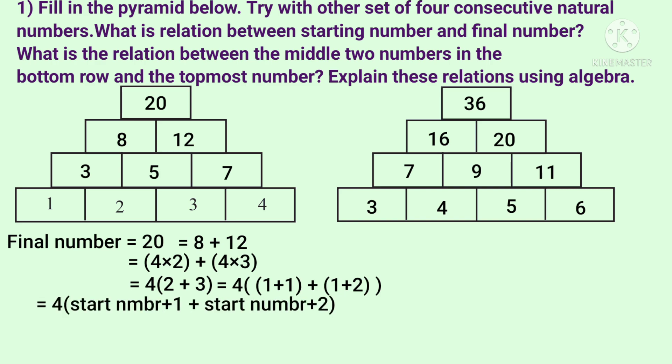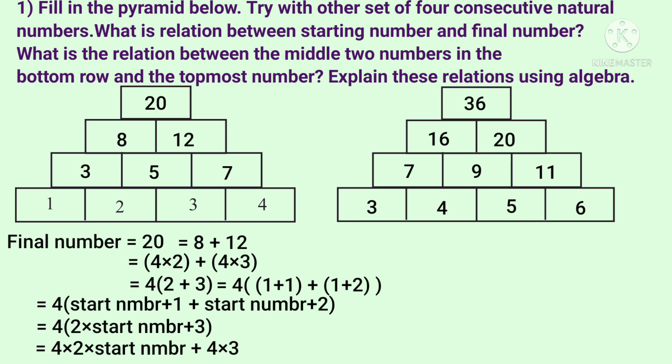This becomes 4 into starting number plus 1, plus starting number plus 2. Starting number plus starting number gives 2 times starting number. So this becomes 4 into 2 times starting number plus 3. Opening the bracket: that is 4 into 2 into starting number plus 4 into 3, which is 8 into starting number plus 12.